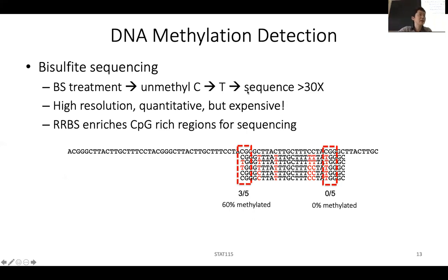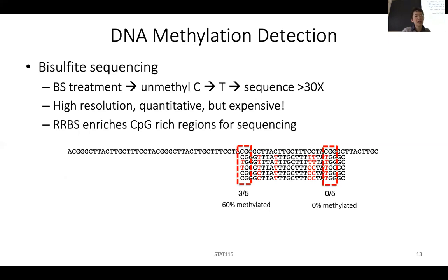There are also experiments called reduced representation bisulfite sequencing, which uses experimental protocols to enrich for CG-rich regions of the genome, so you don't have to sequence the whole genome 30 times — you just need deeper sequencing of CG-rich locations. After getting the DNA sequencing data, you will still get a FASTQ file and can do FASTQC to look at overall sequencing quality.